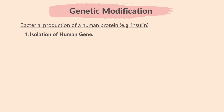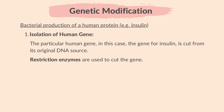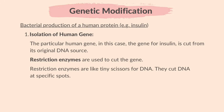The first part of the process is the isolation of the human gene. The particular human gene, in this case the gene for insulin, is cut from its original DNA source. Restriction enzymes are used to cut the gene. Restriction enzymes are like tiny scissors for DNA — they cut DNA at specific spots.